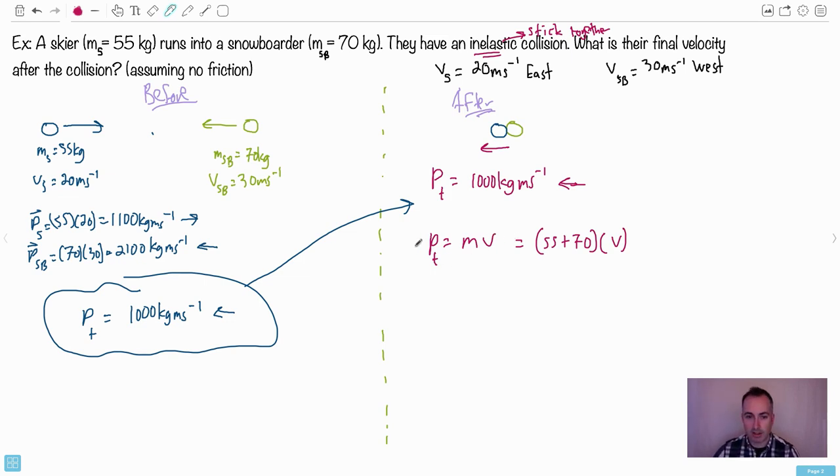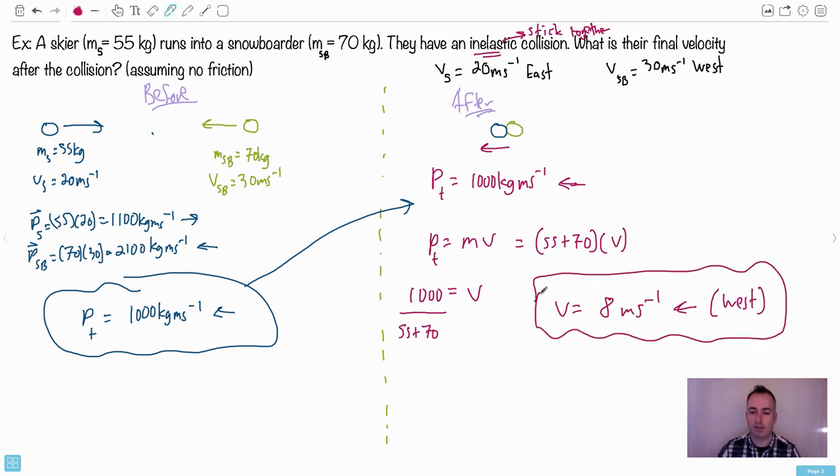So I'm going to take a look at that. I can put in for p total - I've got 1000, so that's going to equal 55 plus 70 times v. That means that 1000 divided by 55 plus 70 - that's going to equal v. I'm going to get out my trusty calculator here. I've got 1000 over 125, I end up with 8. So my velocity then is 8 meters per second, and it's left, so in other words it's west. That's what's going to happen. That's going to be the velocity of both of them together. That's how you can use this to solve things.